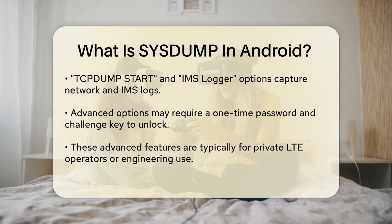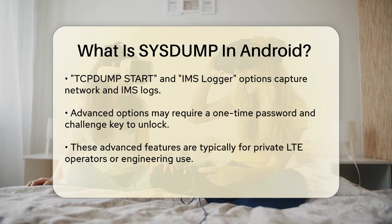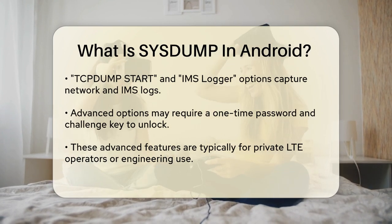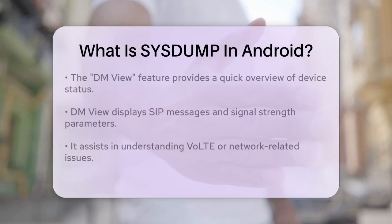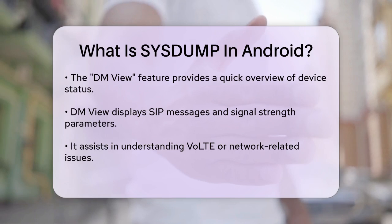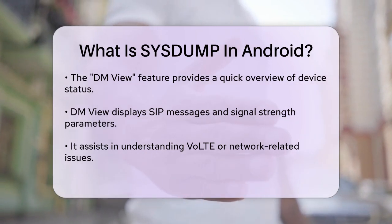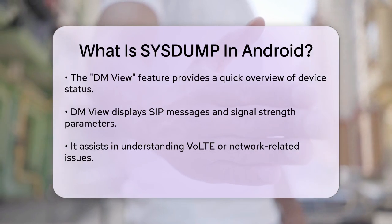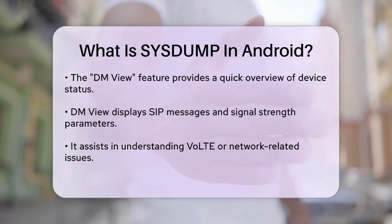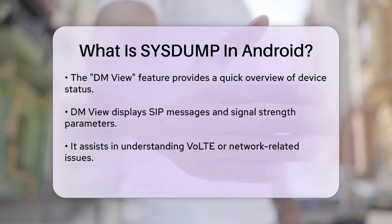The SysDump app also includes a feature called DM View, which is great for getting a quick look at what's happening on your mobile device. Here, you can see SIP (Session Initiation Protocol) messages and signal strength parameters. This can be very helpful in understanding why you might be experiencing issues with VoLTE (Voice over LTE) or other network-related problems.